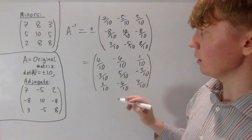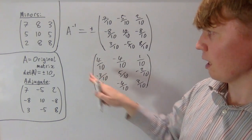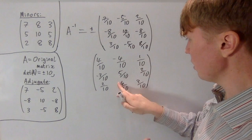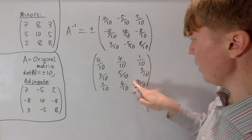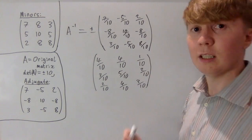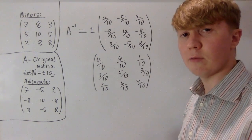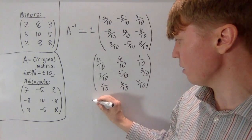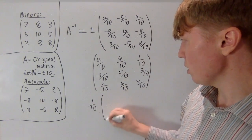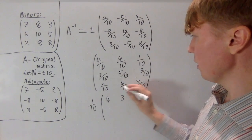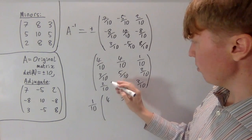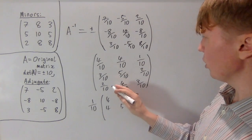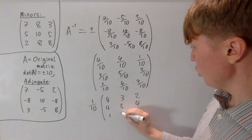This is now our matrix of minors for our inverse matrix. The next thing we need to do is introduce the positive and negative signs — and very neatly, we can get rid of all the negative signs there — giving us our matrix of cofactors. Next we transpose this, taking out a factor of 1 tenth, and transposing gives us: 4, 3, 2, 4, 5, 4, 1, 2, 3.